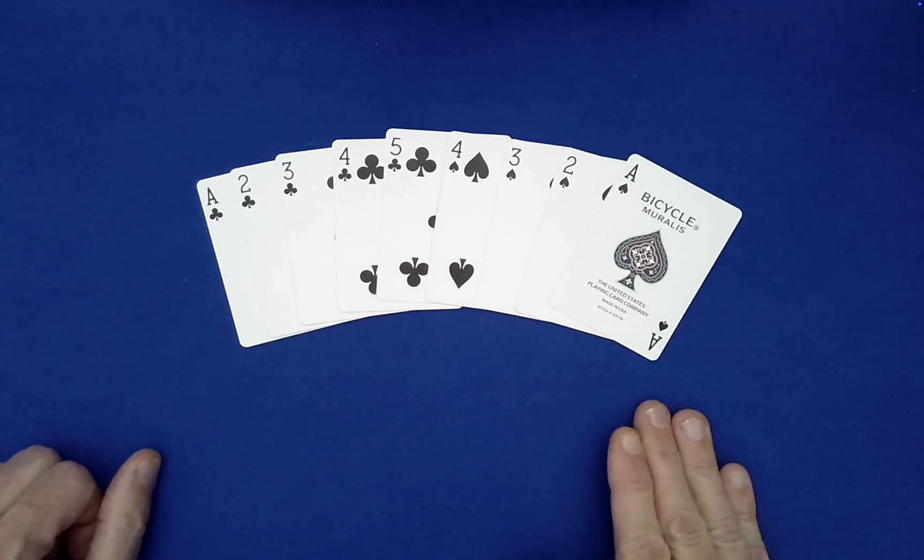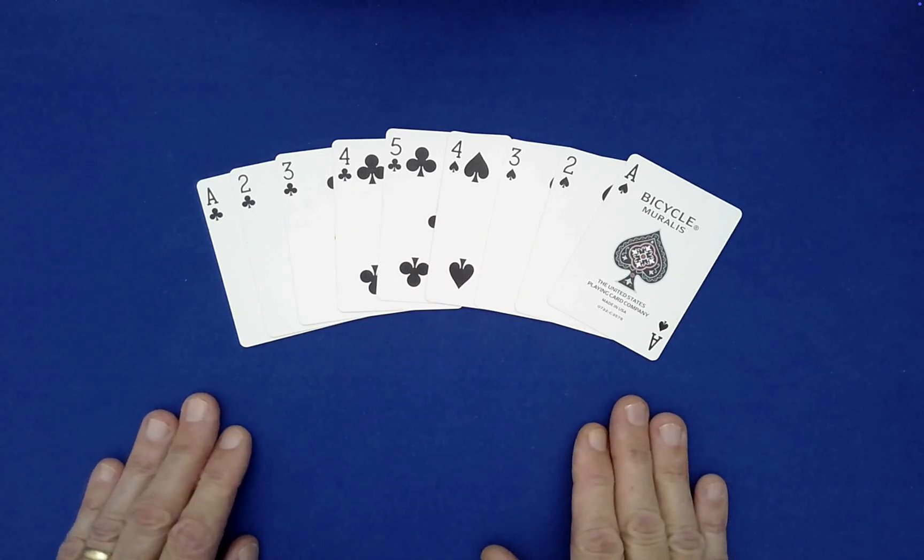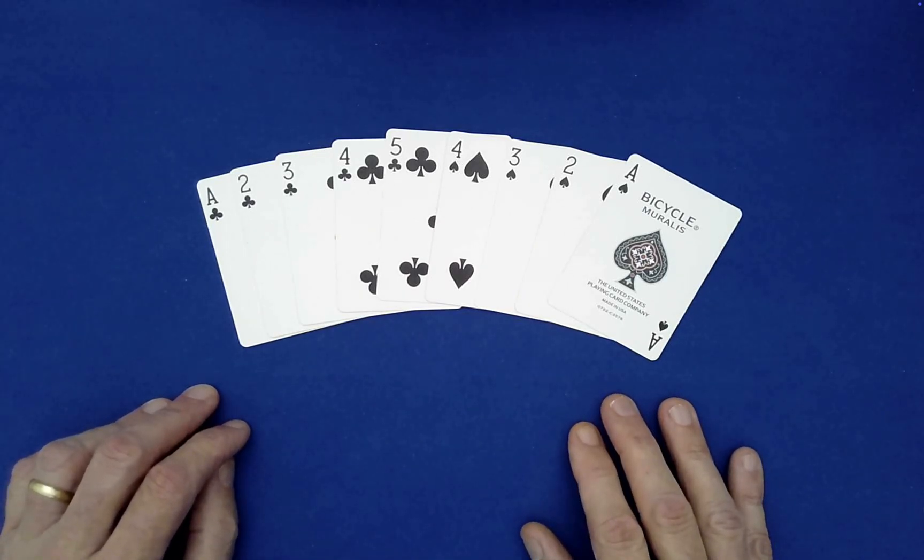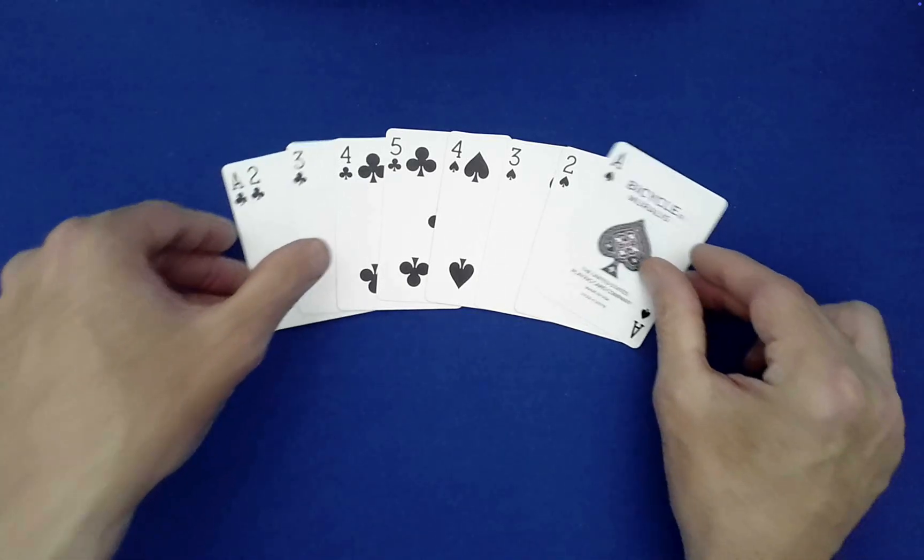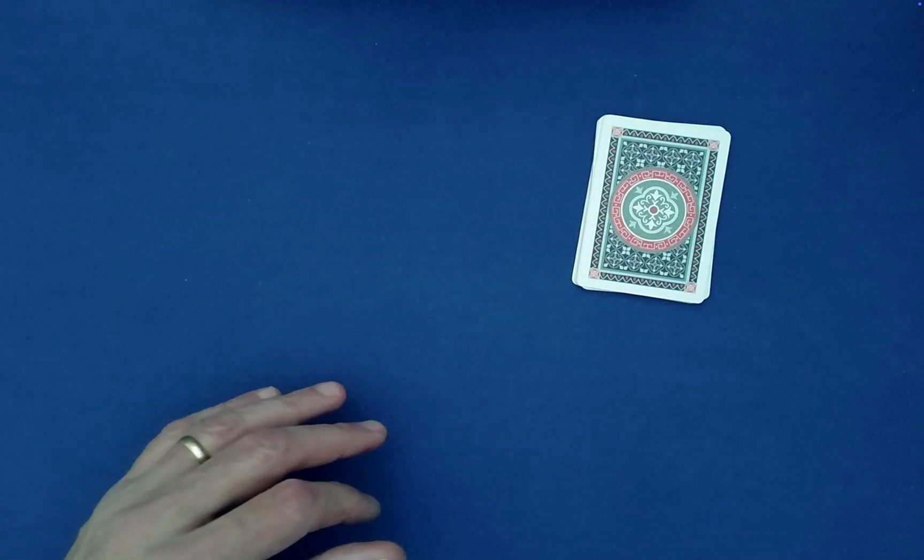So we would call this a mirrored arrangement with a single card in the middle that has no partner. Which is the five. So here we have nine cards. So an odd size packet.